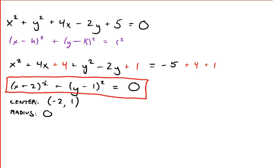We have something squared plus something squared is equal to 0. But a squared number is either always positive or 0. You can't have something squared equal to a negative number. So the only point that's part of this locus is the center, (-2, 1).